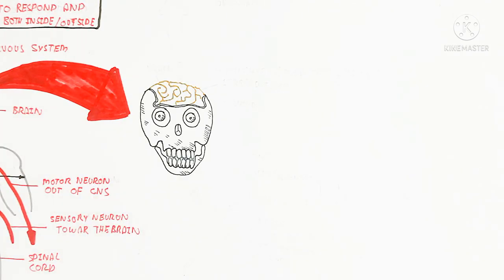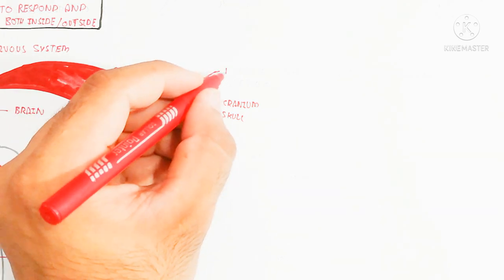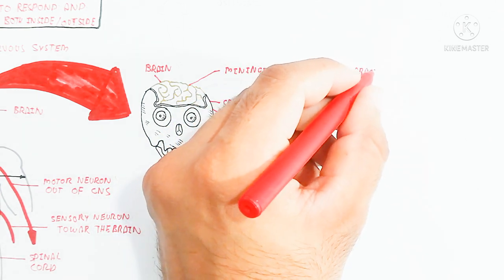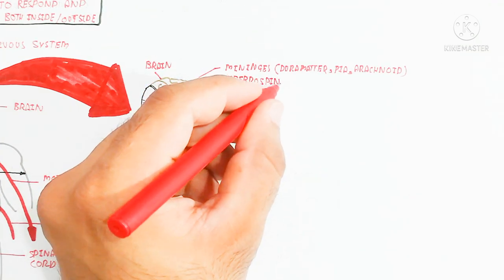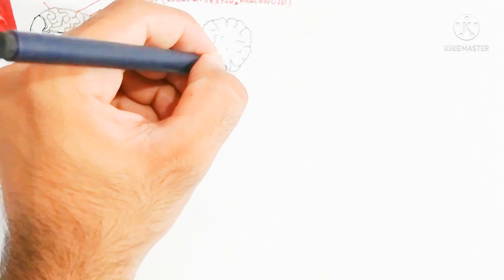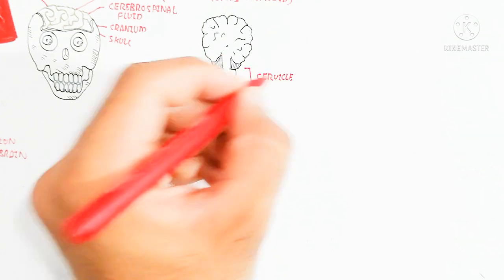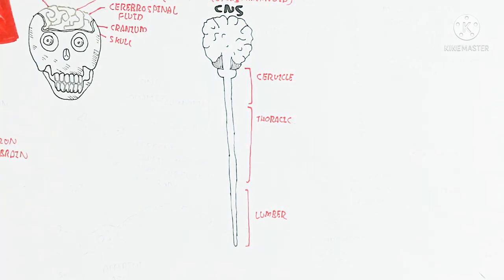The spinal cord is made up of cervical, thoracic, and lumbar regions. The skull, which covers the brain, is known as the cranium. This cranium is made up of bone with sutures present, which are hinge-joint-like structures. The brain contains layers inside called meninges: dura mater, pia mater, and arachnoid. Between these layers, cerebrospinal fluid is present, which acts as a shock absorber.